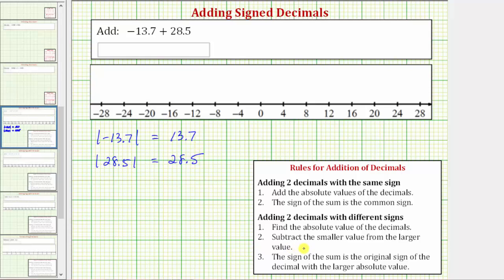Step two: we subtract the smaller value from the larger value. So now let's subtract 13.7 from 28.5.